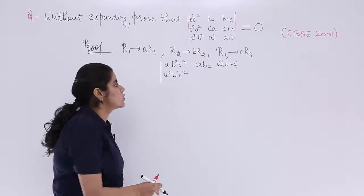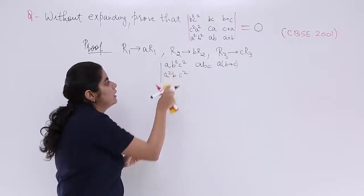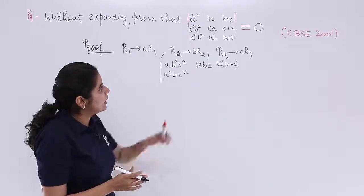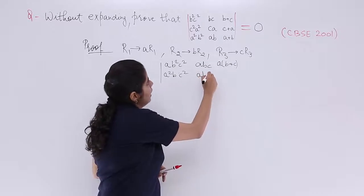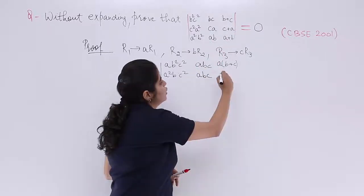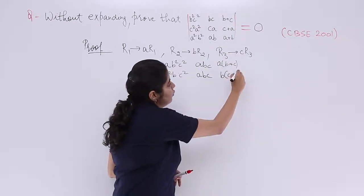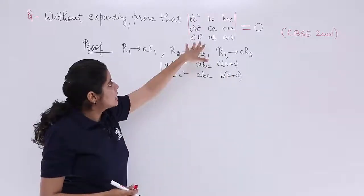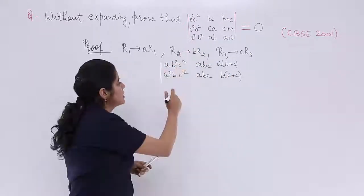Rather write here B. So this is to be done that this is B, right? Similarly, here it is ABC now and here it is B into C plus A. You are getting this? Lastly, what is there? You are multiplying by C. So it is A square, B square, C, ABC, C into A plus B.